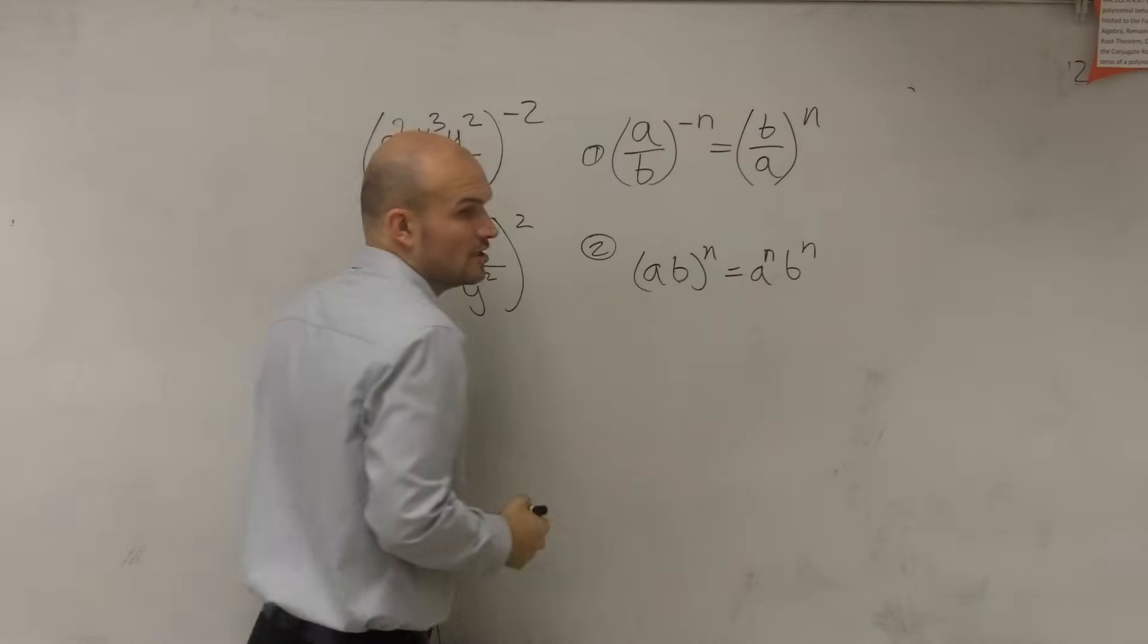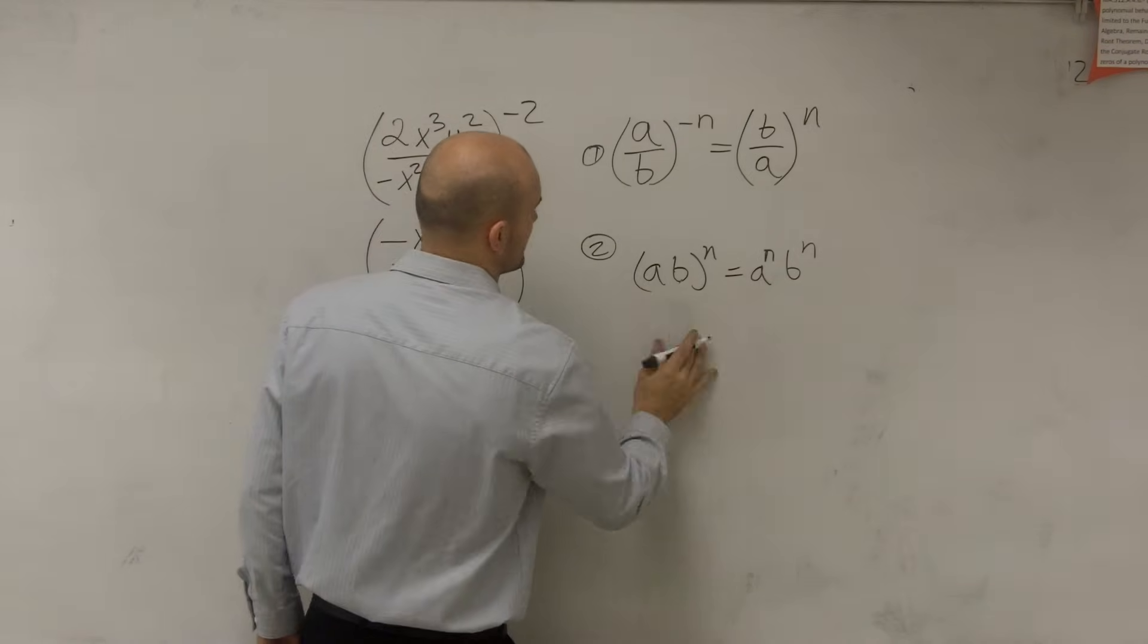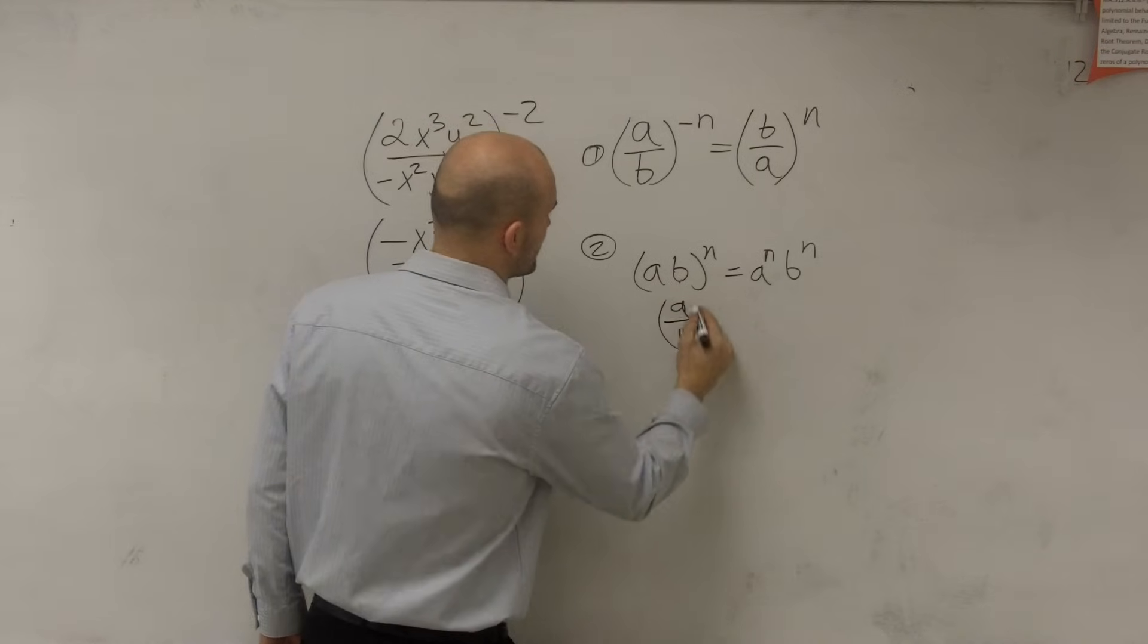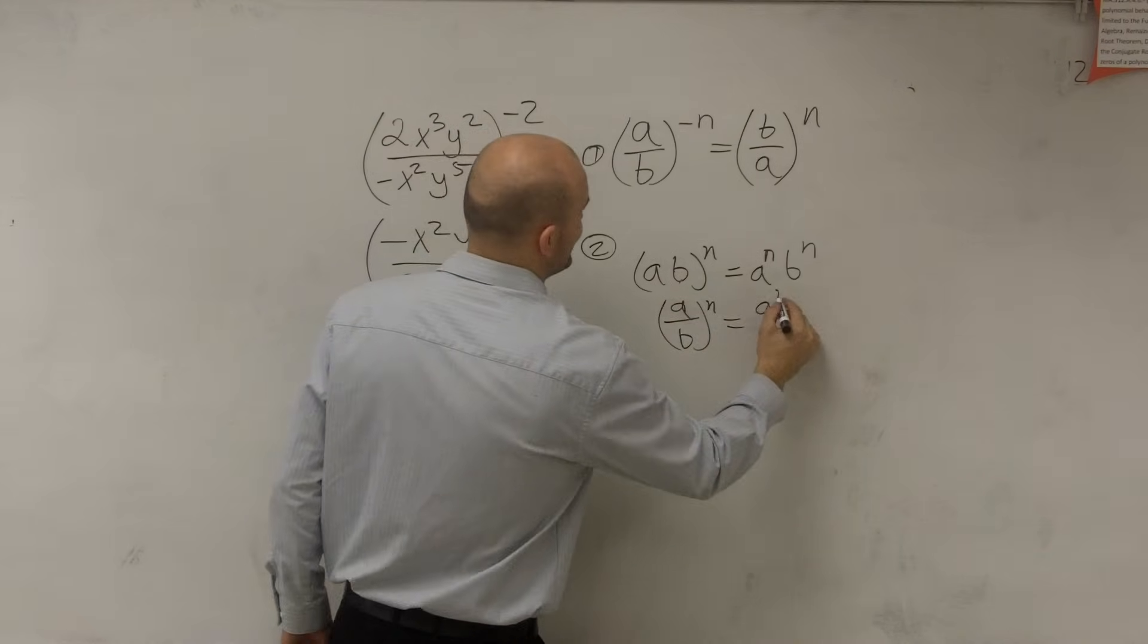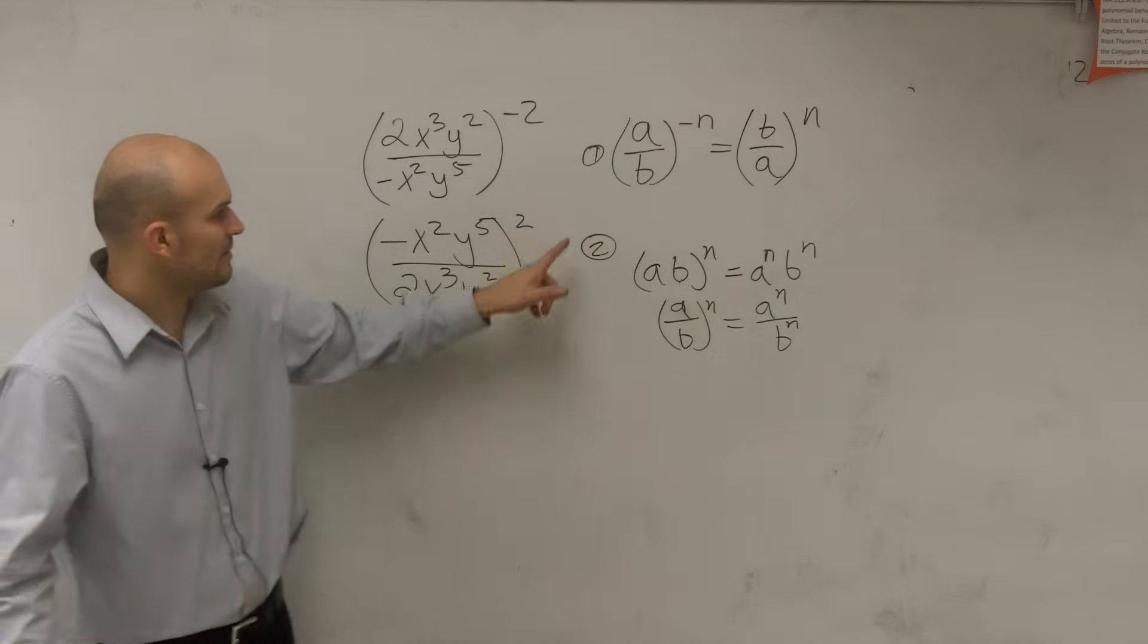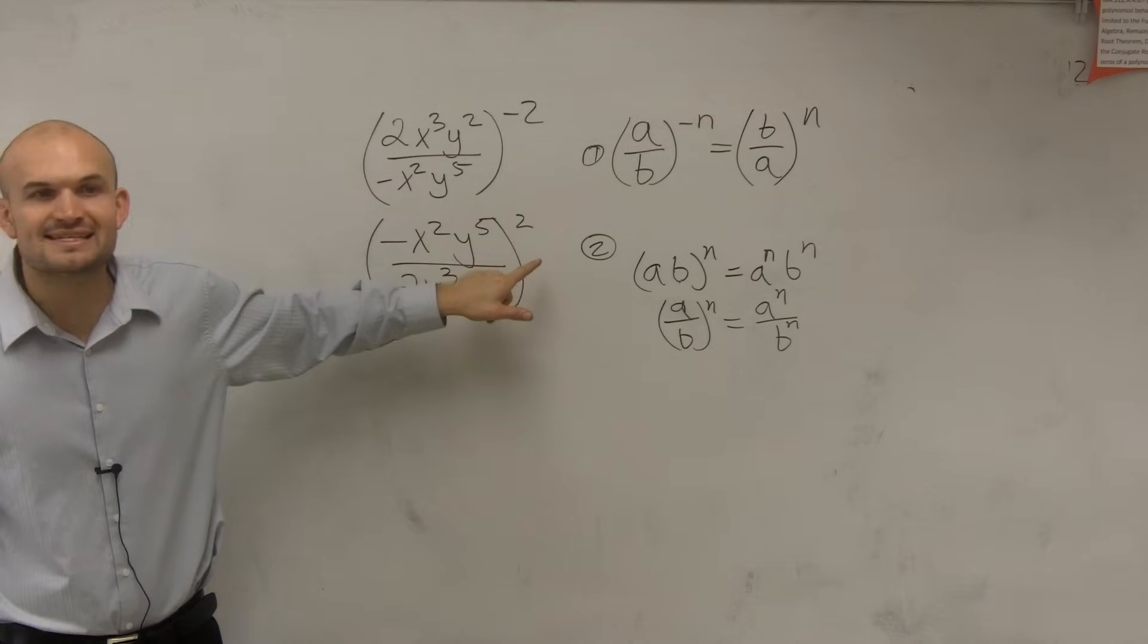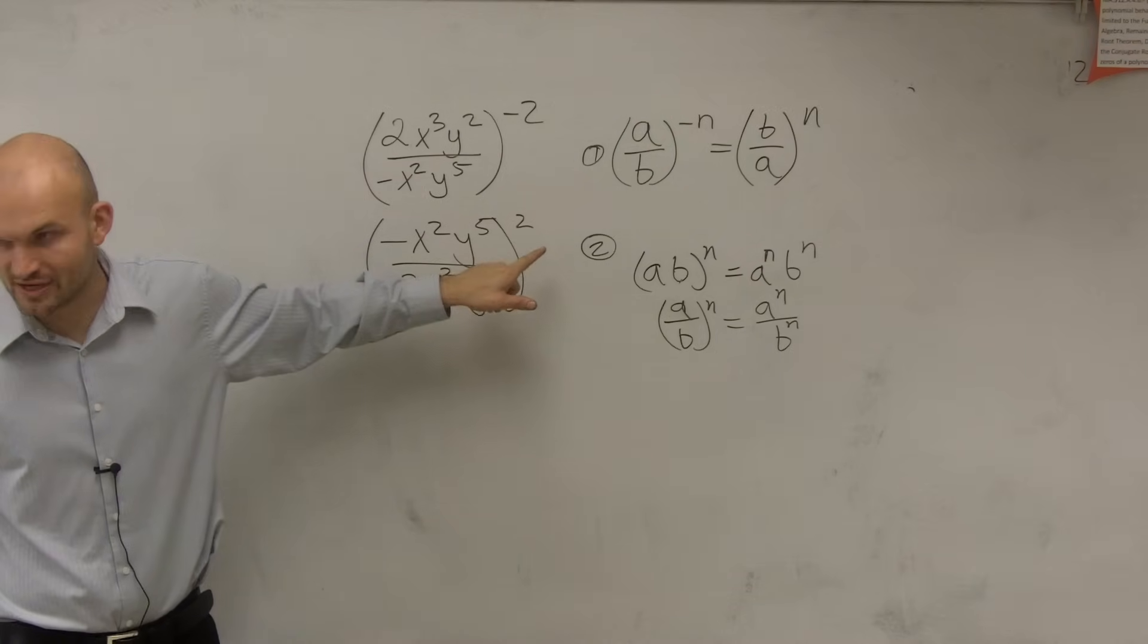That also works for my product and my quotient. If I have a divided by b raised to the n, that equals a to the n over b to the n. So what this is telling me right now is everything inside of here needs to be raised to the second power. Everything.